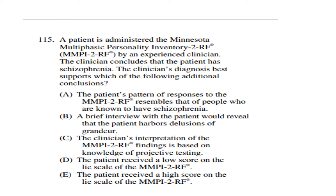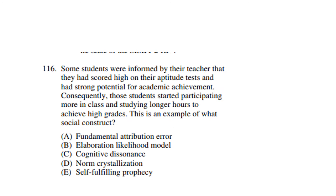Question 115: A patient is administered the Minnesota Multiphasic Personality Inventory-2-RF (MMPI-2-RF), which is the revised edition, administered by a clinician. The clinician concludes that the patient has schizophrenia. Which of the following additional conclusions does this diagnosis best support? The patient's pattern of response to the MMPI-2 resembles that of patients who are known to have schizophrenia — so the symptoms the patient is showing have similarity with those of schizophrenia, making the diagnosis more clear.